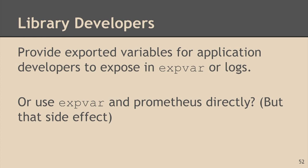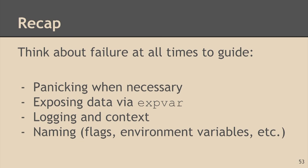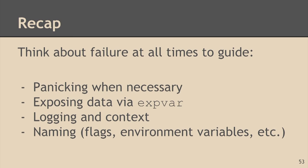To recap: I like to think about failure at all times, and I use it to guide when to panic, when to log, and when to expose data via expvar. If I find myself logging the same variable all the time, I'll throw it in expvar instead. I think about logging in context — if you're logging an unexpected EOF, you probably want the file name or connection in there. And I think about naming a lot — use nice, long, verbose names for flags, environment variables, et cetera. That's it. Thank you. Come talk to me about operations.